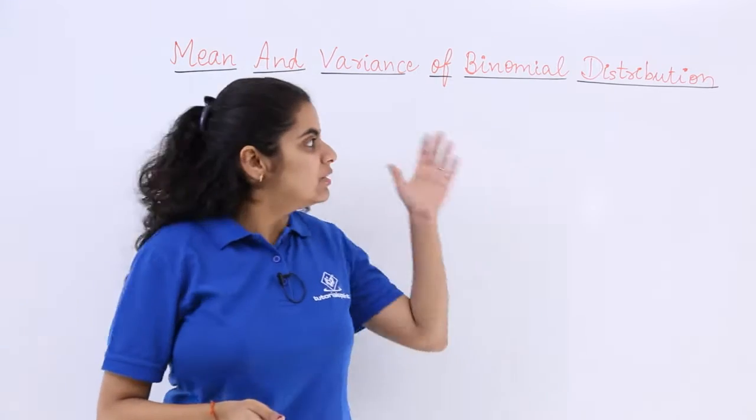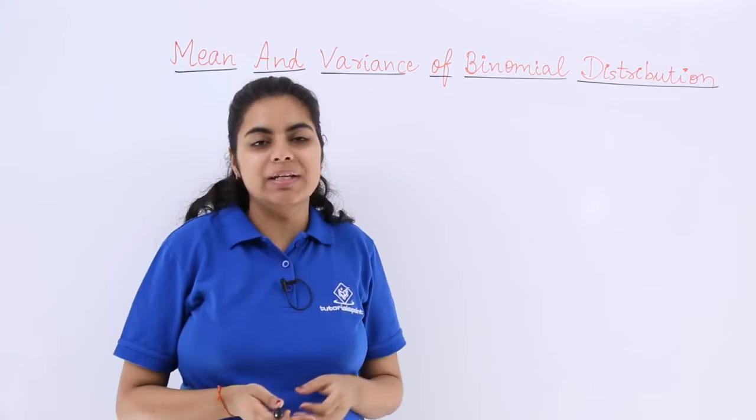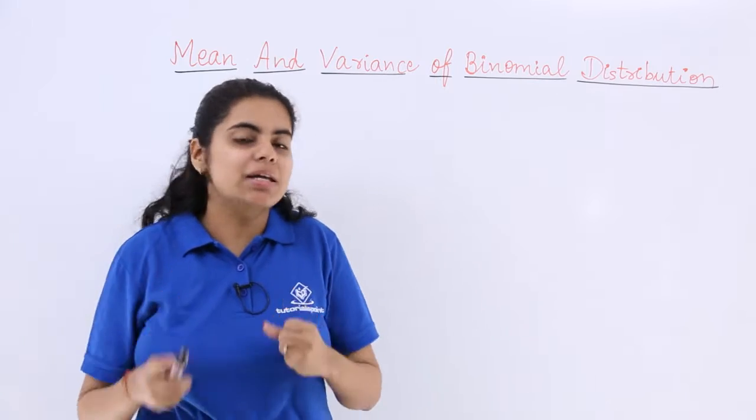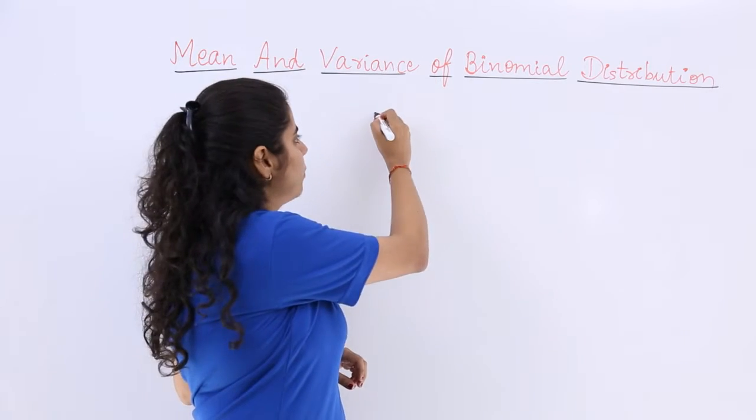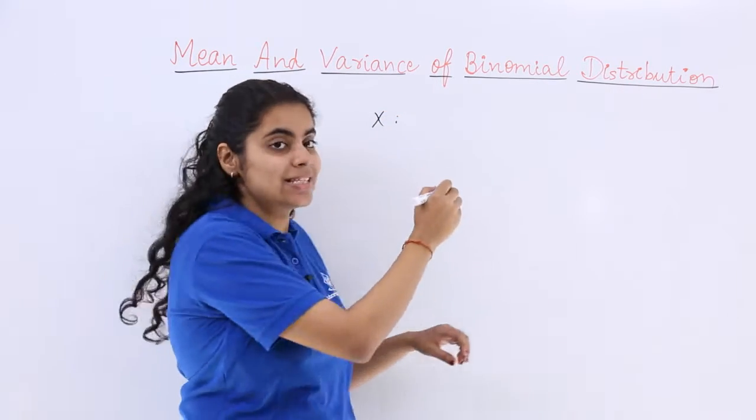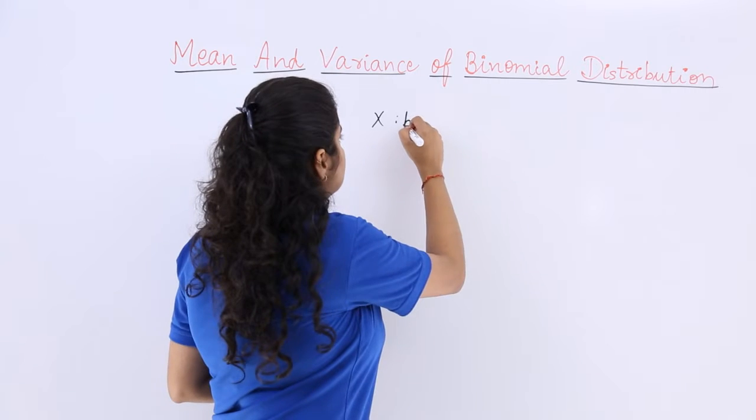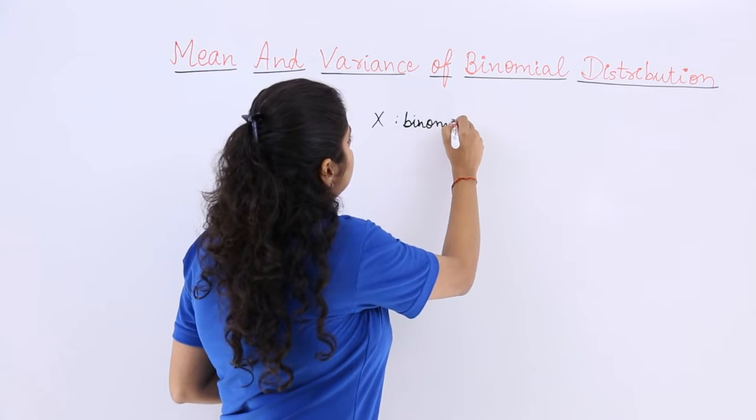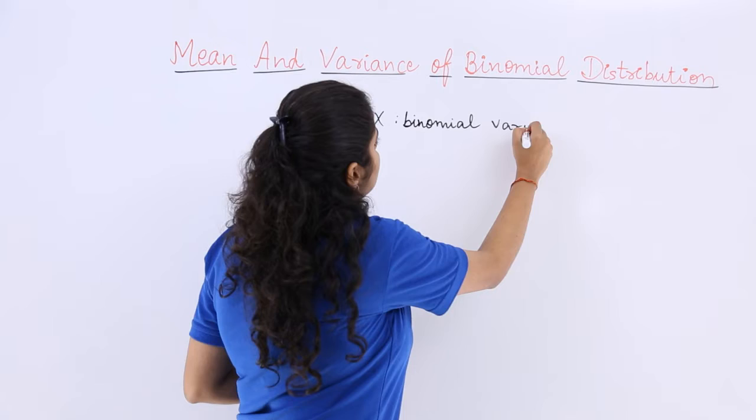Now we are going to talk about the mean and variance of a binomial distribution. Let x be a binomial variate.